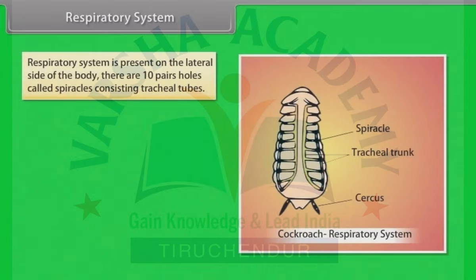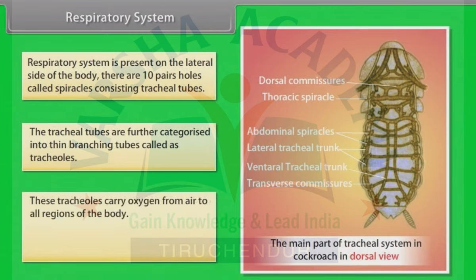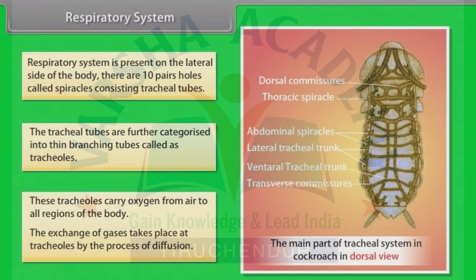Respiratory system: The respiratory system is present on the lateral side of the body. There are ten pairs of holes called spiracles consisting of tracheal tubes. The tracheal tubes are further categorized into thin branching tubes called tracheoles, which carry oxygen from air to all regions of the body. Exchange of gases takes place at the tracheoles by the process of diffusion.